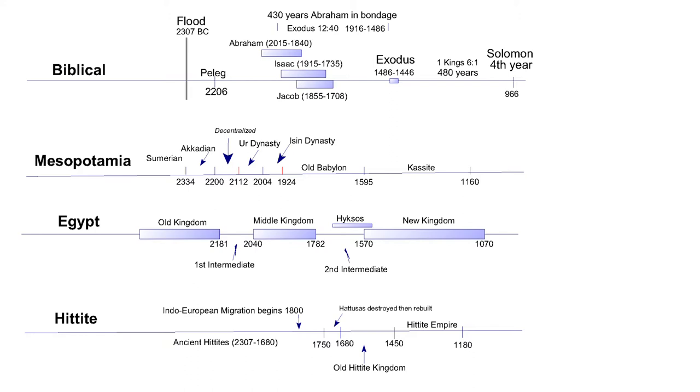We have been looking at secular history for this time period, but now we must shift gears into the biblical history. The first seven chapters of Genesis cover the pre-flood time period — the creation of the world, the Garden of Eden, Cain and Abel, Enoch, and the flood of Noah. The flood of Noah is a good place to start our study because it coincides with known history. We will study the pre-flood parts later after we have gathered all of the data.